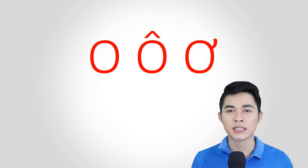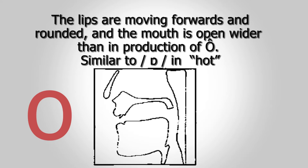O is a low back and rounded vowel which is produced in a deeper position than Ô. The lips are moving forward and rounded and the mouth is open wider in production of O. The sound is somehow similar to the sound R in the word heart.